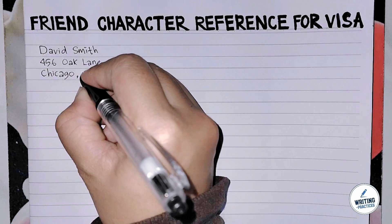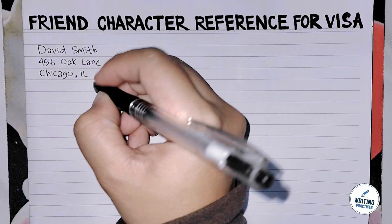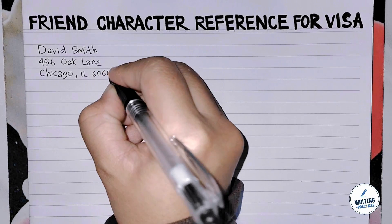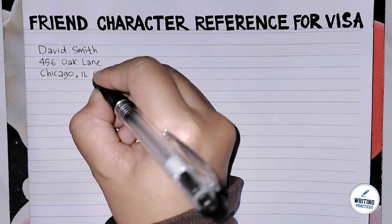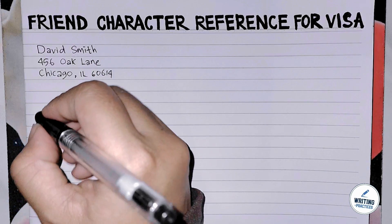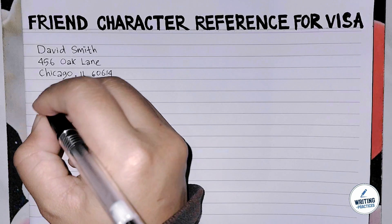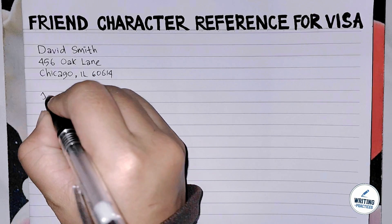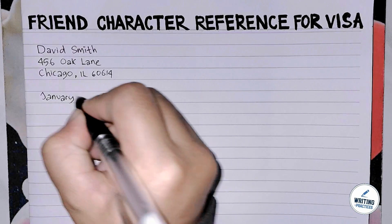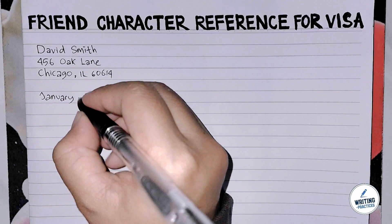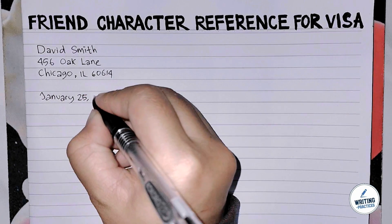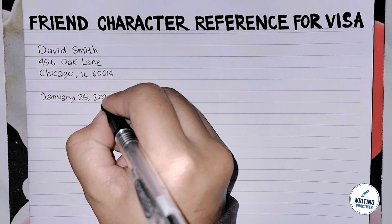Here, Writing Practices will show you how to write a friend character reference letter for visa step by step. First of all, you need to write your information as the sender. You can begin by stating the sender's full name, address, email, and contact information. This will establish the identity and contact details of the person providing the reference. When you write the address, don't forget to include the number, street address, city, state, and zip code.